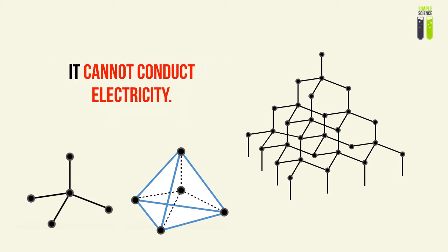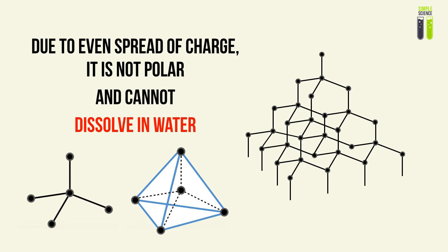Since there are no available electrons in the valence shell, like many other non-metals, carbon in diamond cannot conduct electricity — there are no free electrons within the structure that can carry a charge when a potential difference is applied. Due to the even spread of charge through the covalent bonding, the entire structure has no poles, so it is a non-polar structure. Since it is non-polar, diamond will not dissolve well in a polar substance like water.